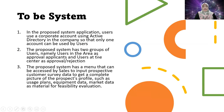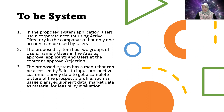For the system login, users use a corporate account via Active Directory in the company so that only one account can be used per user. The proposed system has two groups of users: users in the area as approval applicants, and users at the center as approvers or rejectors.